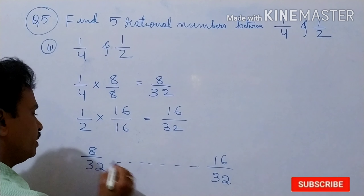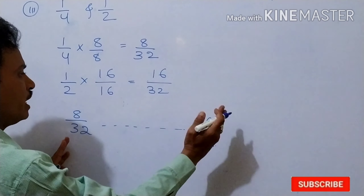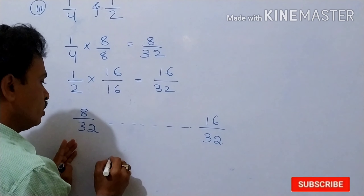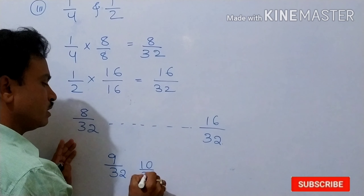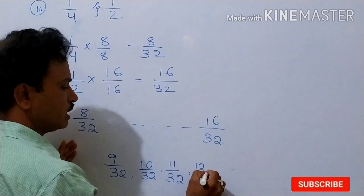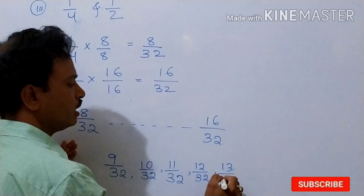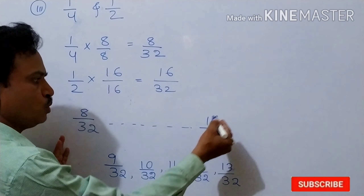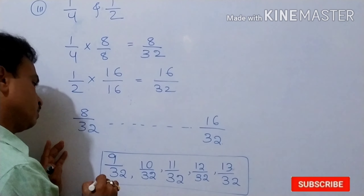Now we should find 5 rational numbers in between 8 by 32 and 16 by 32. After 8, we go 9, 10, 11, 12 and so on. So: 9 by 32, then 10 by 32, 11 by 32, 12 by 32, then 13 by 32. That gives 5 rational numbers between 8 by 32 and 16 by 32.